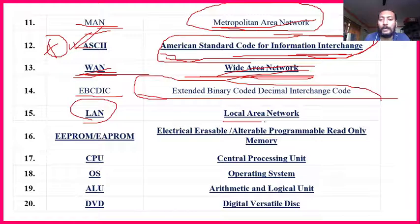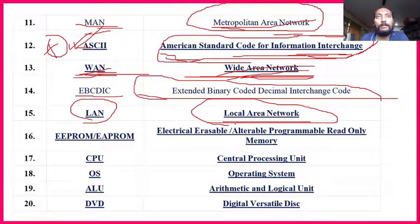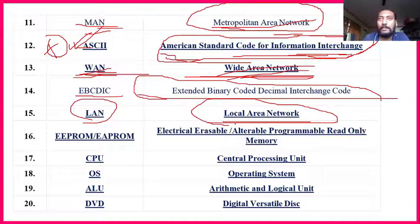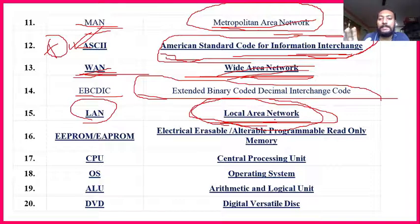EBCDIC is not at all important — no need to remember that code. LAN — Local Area Network — is important. Local area means in your particular area. For example, in North Korea they have their own network inside their country; you cannot run Google or WhatsApp there without government permission. They have their own local network. Similarly China's media operates inside their country. That restricted network is called Local Area Network.